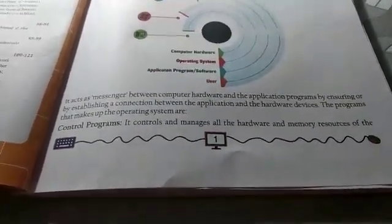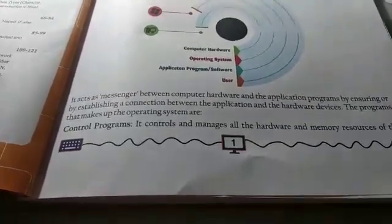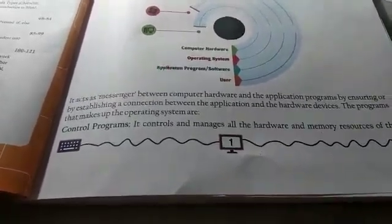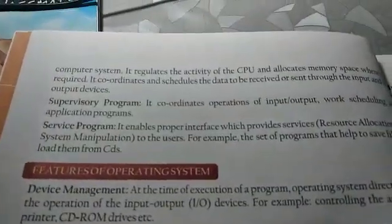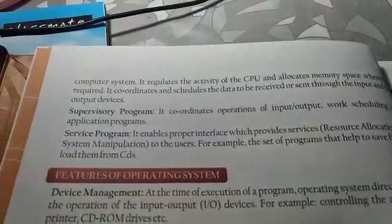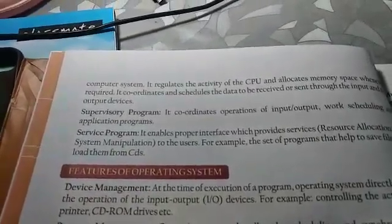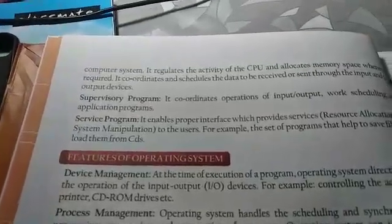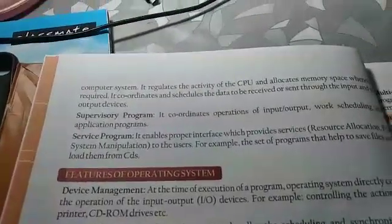The Operating System also manages the hardware and memory resources of the system. It regulates the activities of the central processing unit and is also responsible for allocation of memory wherever it is required, whether in the hard disk (the secondary storage device), the RAM, or ROM.